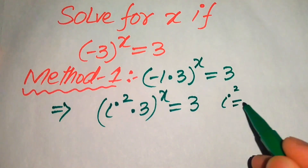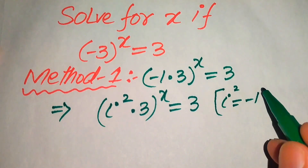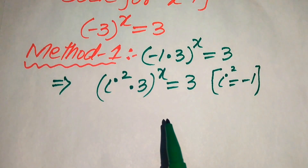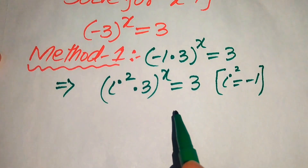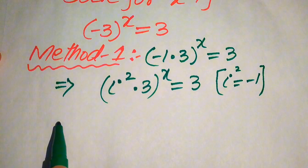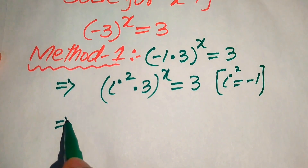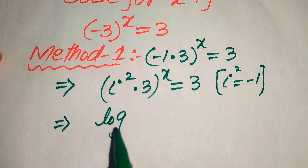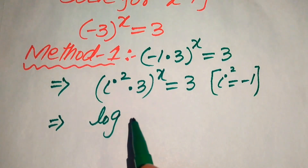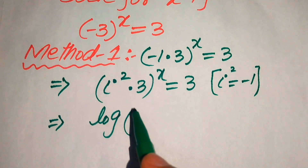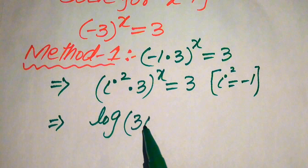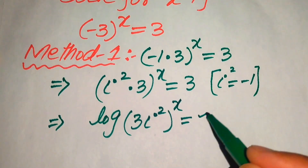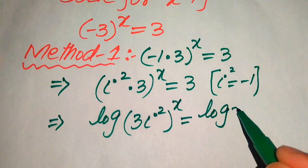Remember that iota squared equals minus 1. Now in the next step we apply the common logarithm on both sides. The common logarithm is a logarithm whose base is 10, denoted by 'log'. We write this as: log of (3 · iota²) to the power x equals log of 3.